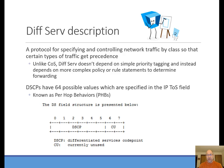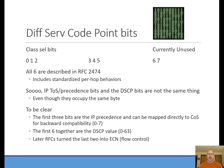Those 64 possible values also have some basic configurations called per-hop behaviors, which we'll talk about in a minute. The first three bits of the field come from the 802.1Q priority mapping, and then we can also manipulate bits 3, 4, and 5. Bits 6 and 7 are the currently unused ones. Manipulating these bits gives us the ability to create our own unique DSCP values and policies, as well as implement the standard per-hop behaviors. The type of service and DSCP bits occupy the same space in the IP header, but they're used differently.